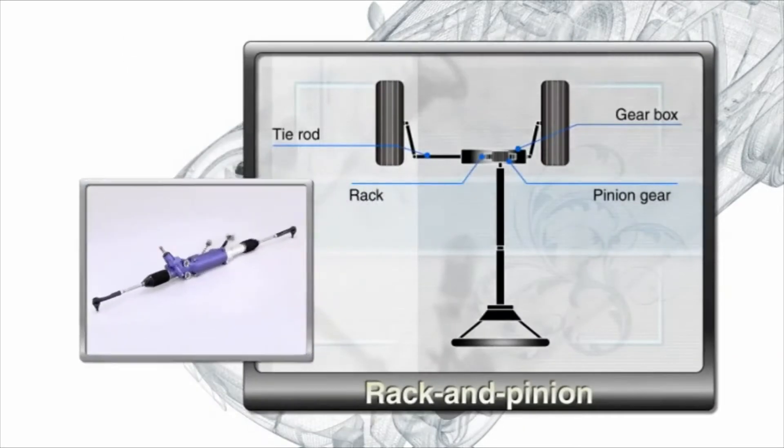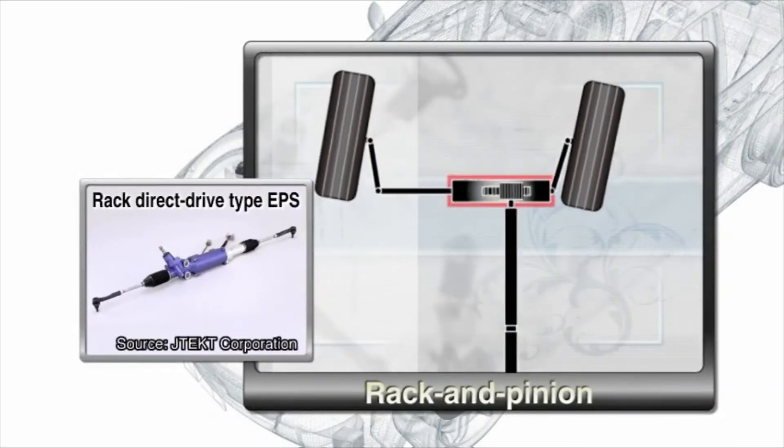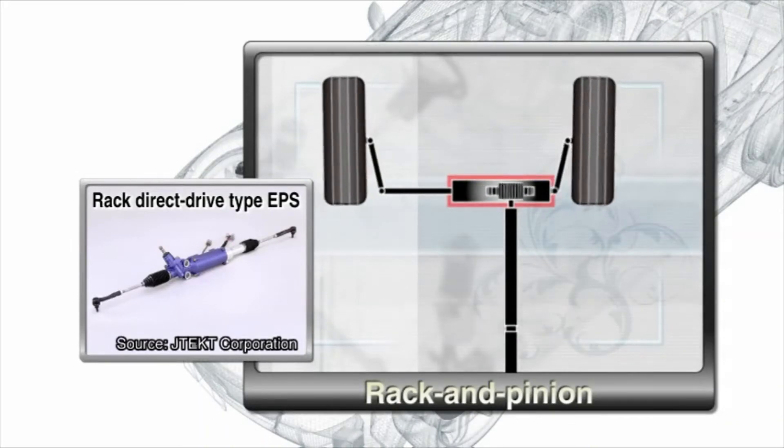In the rack and pinion steering, the circular pinion gear on the end of the steering shaft engages the teeth of a flat bar rack, moving the tie rod horizontally.